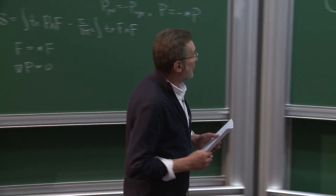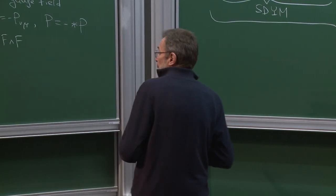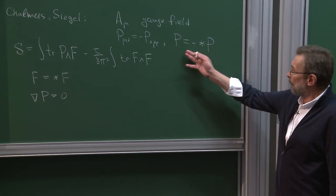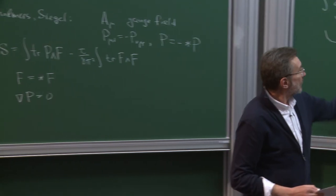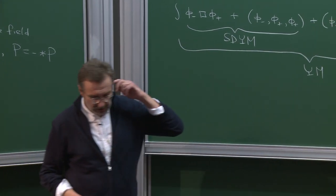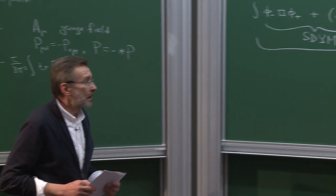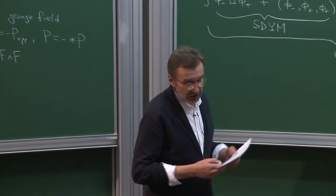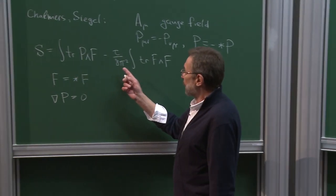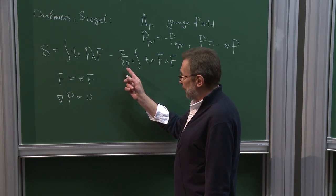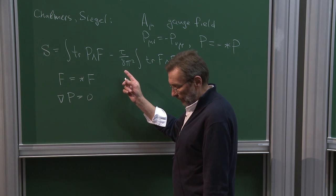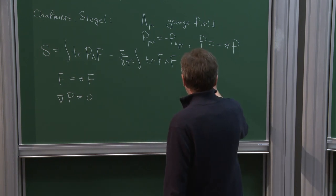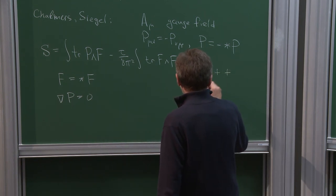The theory is not left-right symmetric, which is clear in this formulation because we imposed such a constraint, and also in the light-cone formulation because it is not symmetric under exchange of φ− and φ+. Therefore it is not CPT invariant. This Lagrangian cannot be formulated in terms of real fields in Minkowski space — only in Euclidean signature or in signature (2+, 2−).